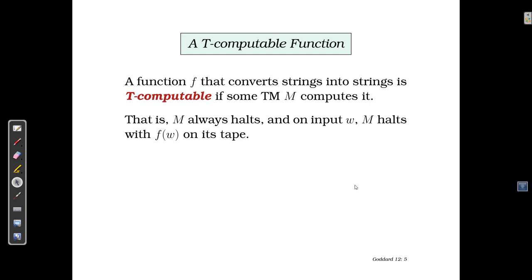The next thing we want to talk about in the variations of Turing machines is a t-computable function. What exactly is a t-computable function? It is a simple function f that converts one string into the other.